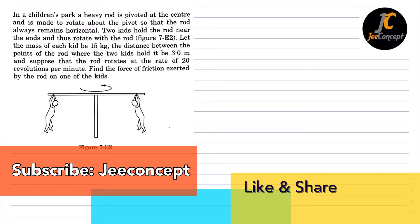Two kids hold the rod near the ends and thus rotate with the rod. Let the mass of each kid be 15 kg. The distance between the points of the rod where the two kids hold it is 3 meters, and suppose that the rod rotates at a rate of 20 revolutions per minute. Find the force of friction exerted by the rod on one of the kids.